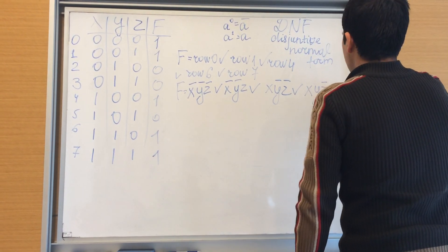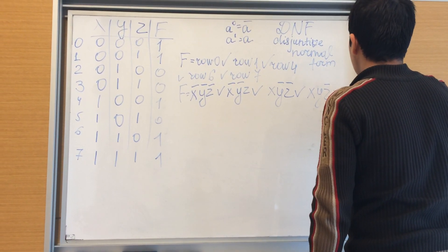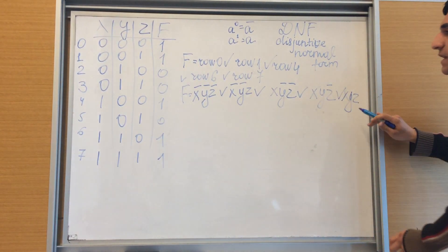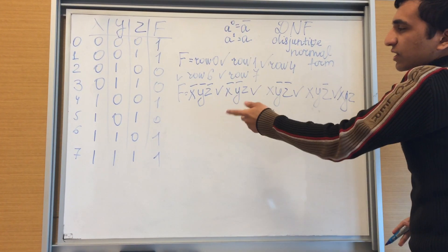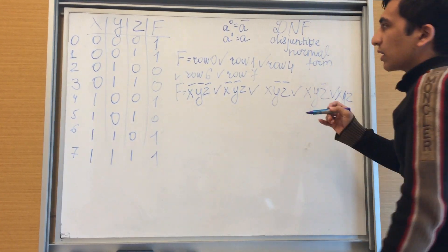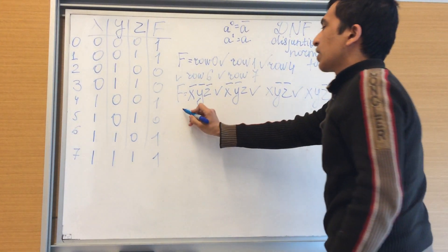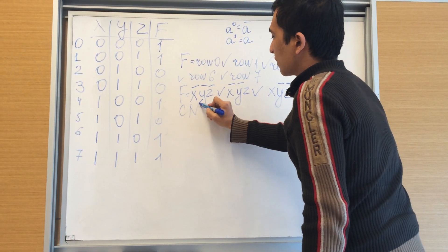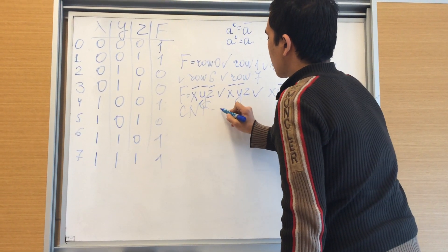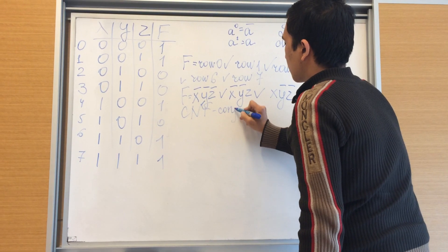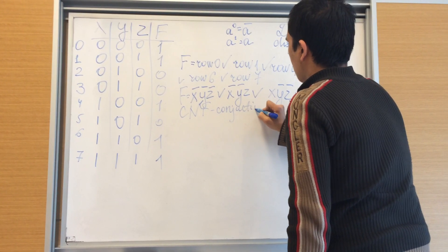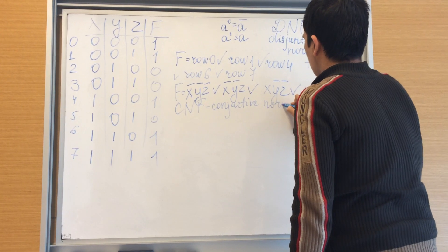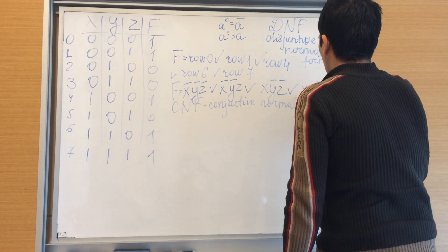That's the DNF form of this given truth table. Let's see how we can make CNF. CNF means conjunctive normal form.